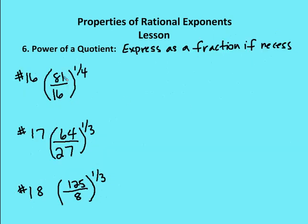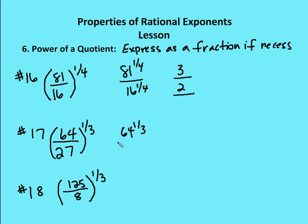Three more problems. First: 81 to the 1 fourth over 16 to the 1 fourth. It's easier to separate them and solve individually rather than dividing 16 into 81 without a calculator. 81 to the 1 fourth gives 3 — since 3 to the 4th is 81. 16 to the 1 fourth gives 2 — since 2 times 2 times 2 times 2 is 16. So the answer is 3 over 2. Next: 64 to the 1 third over 27 to the 1 third. The cubed root of 64 is 4, and the cubed root of 27 is 3. Answer is 4 over 3.